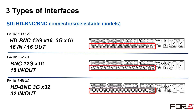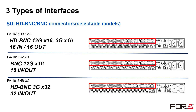The FA1616H-B3G has 32 HD BNC connectors, all of which support up to 3G, and each connector can switch between input and output. The red frame in the figure shows four option slots, which can be equipped with option cards for IP signals and audio option cards such as Dante and MADI.